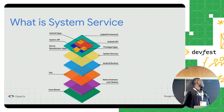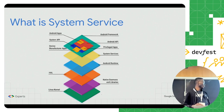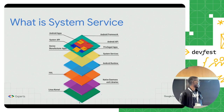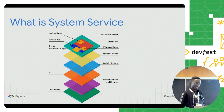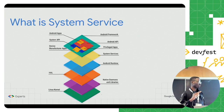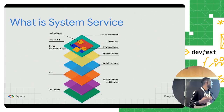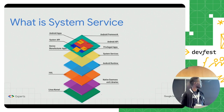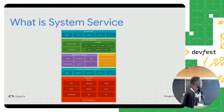In order to understand what the system service is, it's important to understand the architecture of the Android operating system. Everything starts from the bottom with the Linux kernel, because Android is a Linux-based operating system. From the top, we have our custom application, or it can be the system application or the device manufacturer-based application. The Android system is basically divided into different layers.